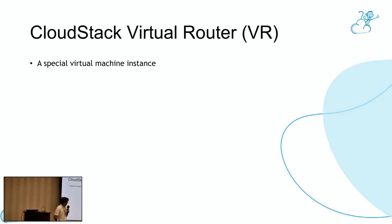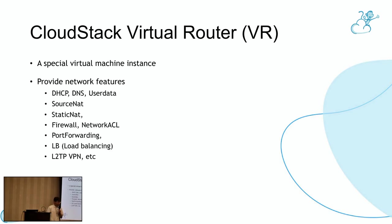For the networks, there is a classic virtual router running. The classic virtual router is a special virtual machine instance that provides some network functions. For example, in shared networks and isolated networks, it's the DHCP server, DNS server, and also the user data server. For isolated networks, it also acts as a gateway, providing more network functions such as source NAT, destination NAT, firewall ACL, load balancing, port forwarding, and L2TP VPN.